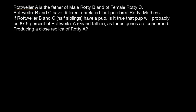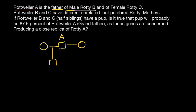We are told that Rottweiler A is the father, so here is Rottweiler A. He is the father of male Rottie B and female Rottie C. Let's draw them here from two unrelated mothers — one mother and another mother. This is our pedigree. Here is male Rottie B and female Rottie C.